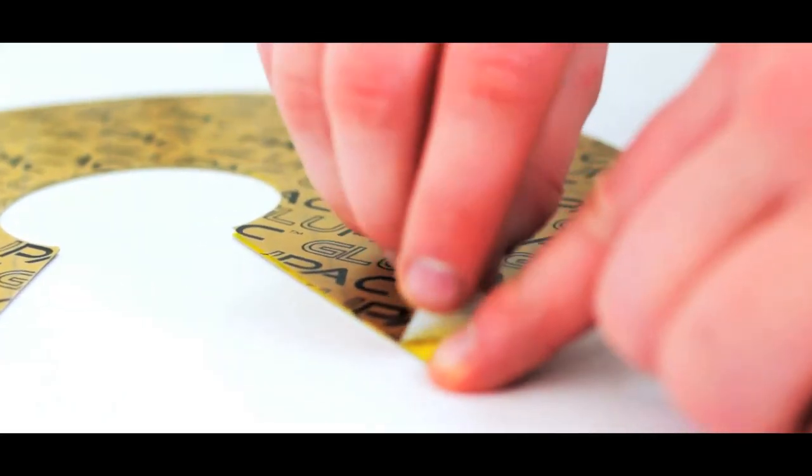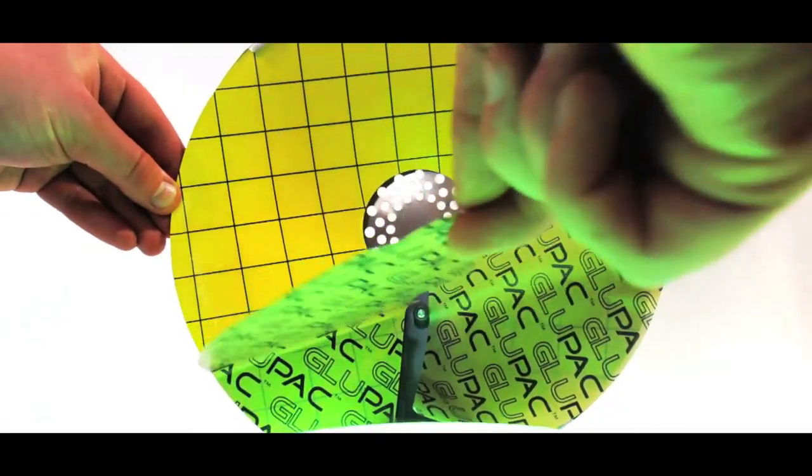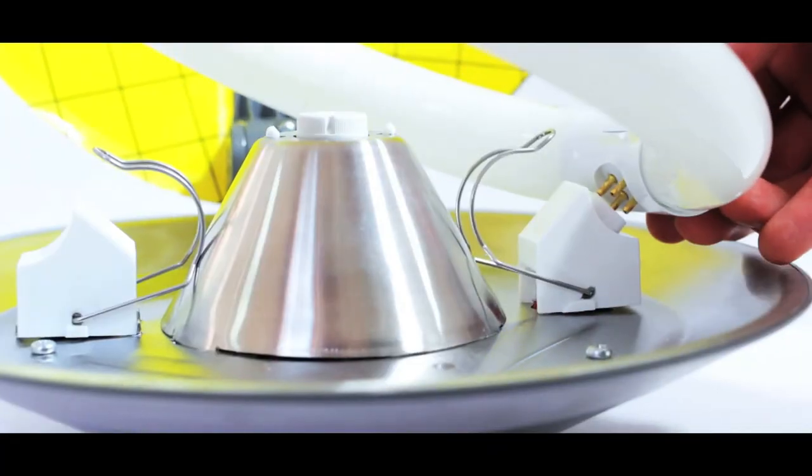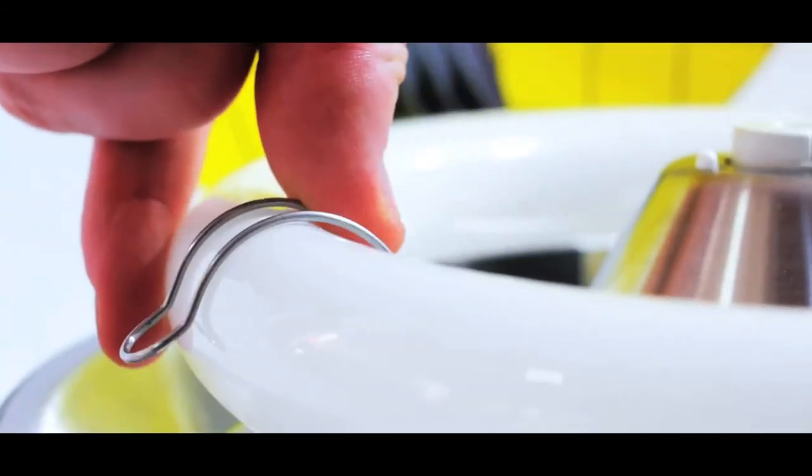Simply remove the glue board from the packet and place inside the outer shell. The UV bulb then clips into place and needs replacing on an annual basis.